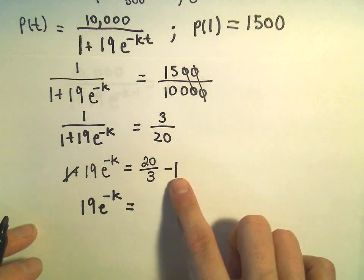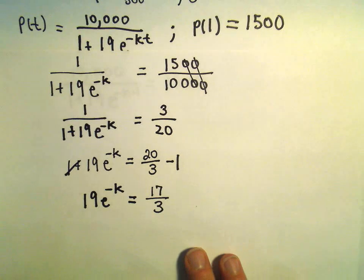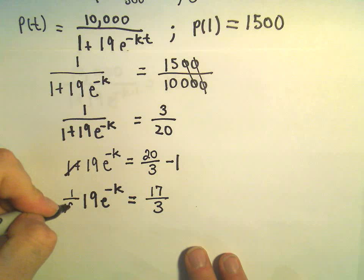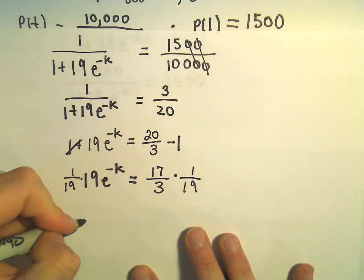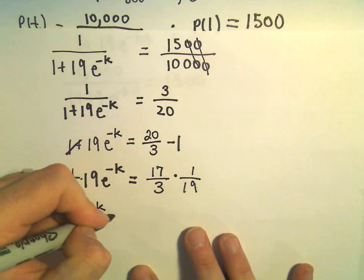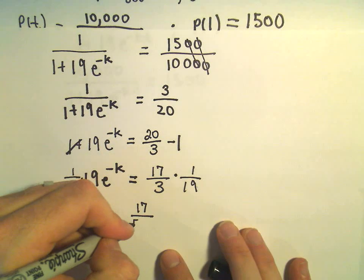Let's see. 20-thirds minus 3-thirds would give us 17-thirds. And now to get rid of the 19, we can just multiply both sides by 1 over 19. So we've got e to the negative k equals 17. Let's see. 3 times 19 is going to give us 57.